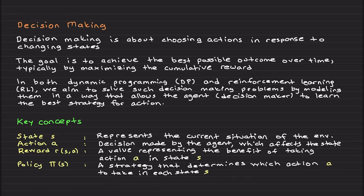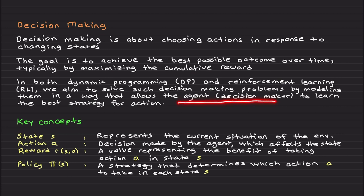Welcome back. In this video I will introduce Markov Decision Process and give some examples. But first I would like to talk about decision making. Decision making is about choosing actions in response to changing states, and the goal is to achieve the best possible outcome over time, which is done by typically maximizing the cumulative reward. In both dynamic programming (DP) or reinforcement learning (RL), the aim is to solve such decision making problems by modeling them in a way that allows the agent — the decision maker — to learn the best strategy for action. We are going to model this using Markov Decision Processes, but first I would like to highlight some key concepts.